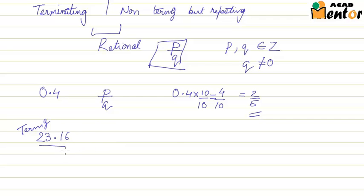Now how do you represent this in the form of P by Q? What you basically do is just remove the decimal by one place and by two places and divide the whole number by 100, by 1 followed by number of zeros equal to the places you have moved the decimal.